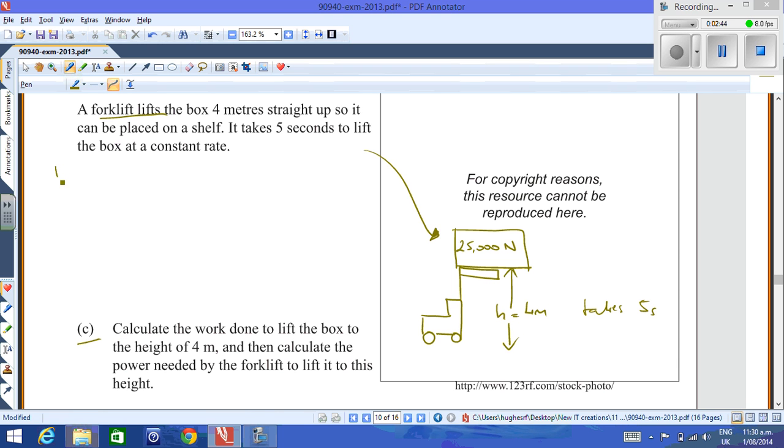So the first part here, work equals force times distance, which in this case the force that's being moved is 25,000 Newtons and it's being moved over a distance of four meters, and so that gives you a value of 100,000 joules.